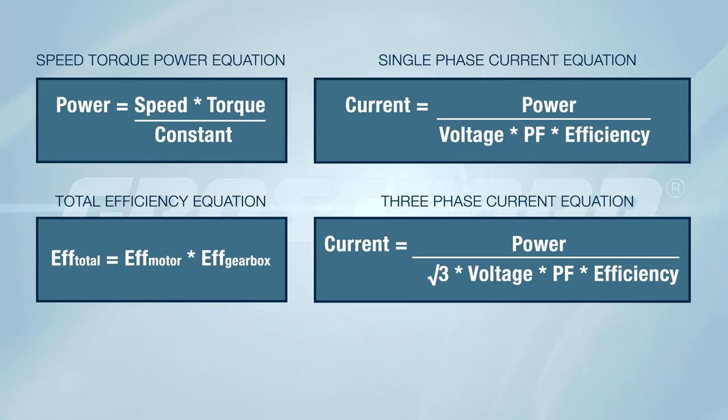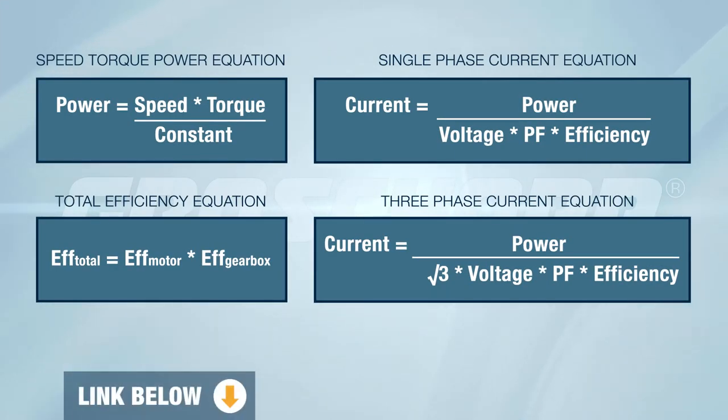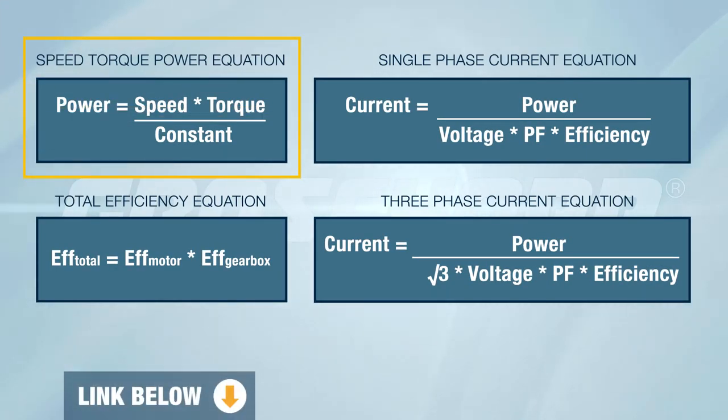As we've mentioned in previous videos, speed, torque, and power are the fundamental ways to rate a motor. Here are four equations to get you started. We've included a link below to download these. The first equation is used to determine the relationship between speed, torque, and power.